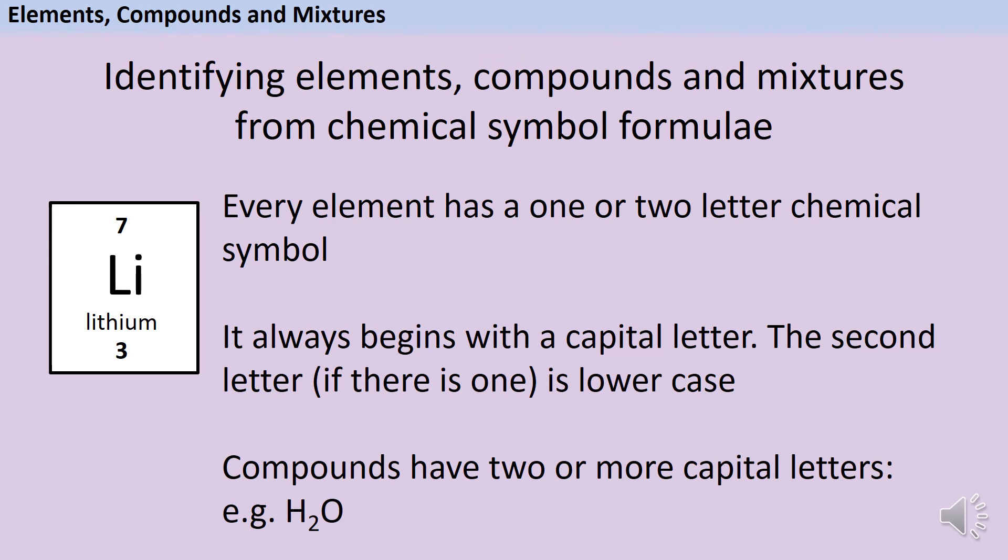Mixtures don't have chemical symbol formula because the symbol formula also tells us the ratio of those elements. So for instance, H2O means that there are two hydrogen atoms for every one oxygen atom. And in a mixture, there isn't a constant ratio of different elements bonded together.